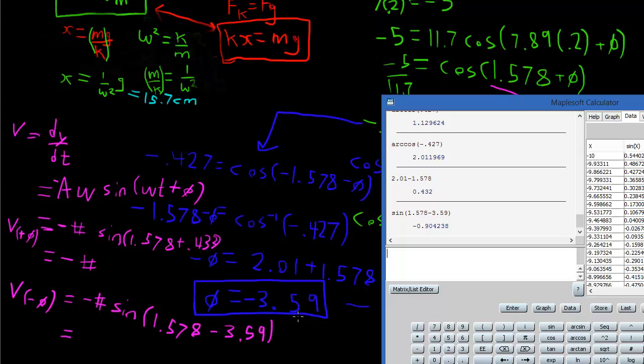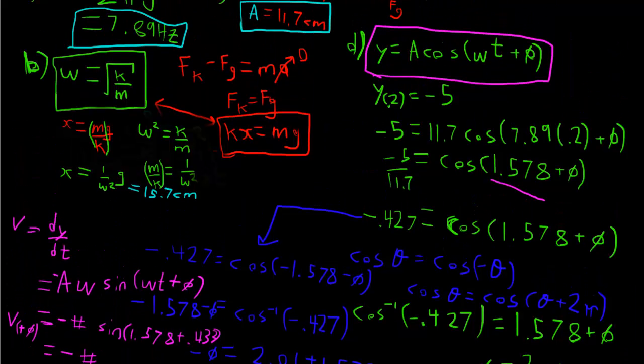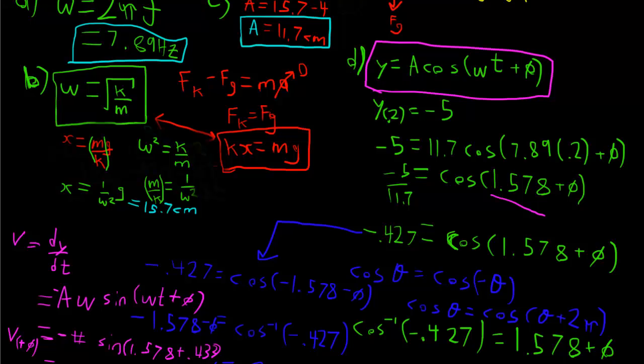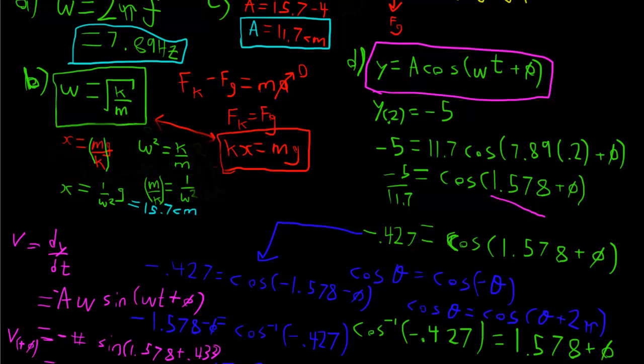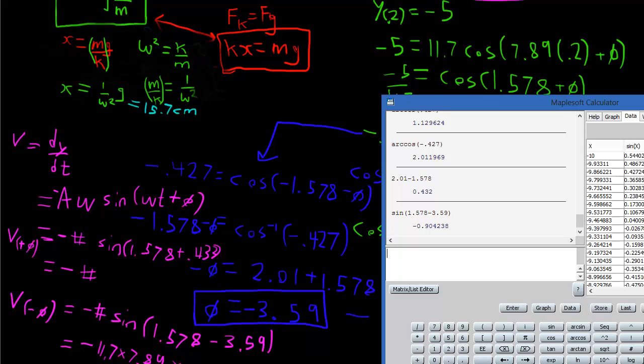Okay, so negative .904. And actually what's a omega? So a, we figured out from above as well, 11.7 times omega, which is 7.89. And then the value we got for this was negative .904.